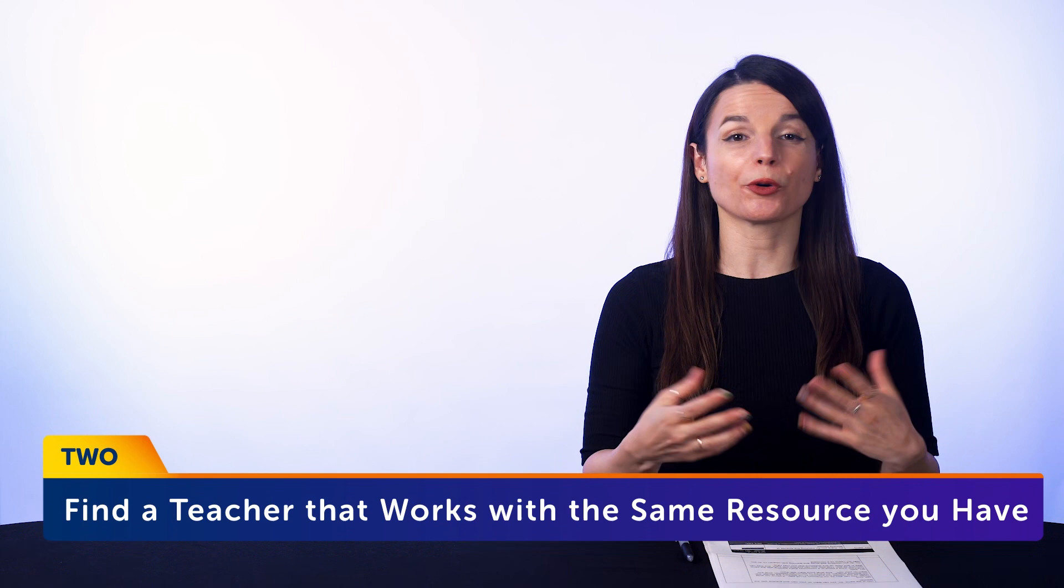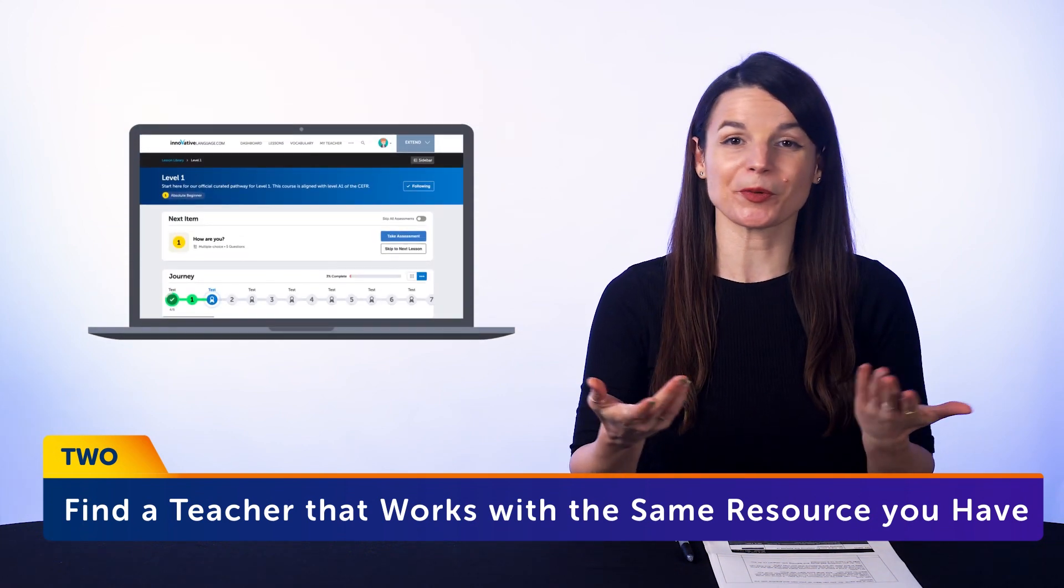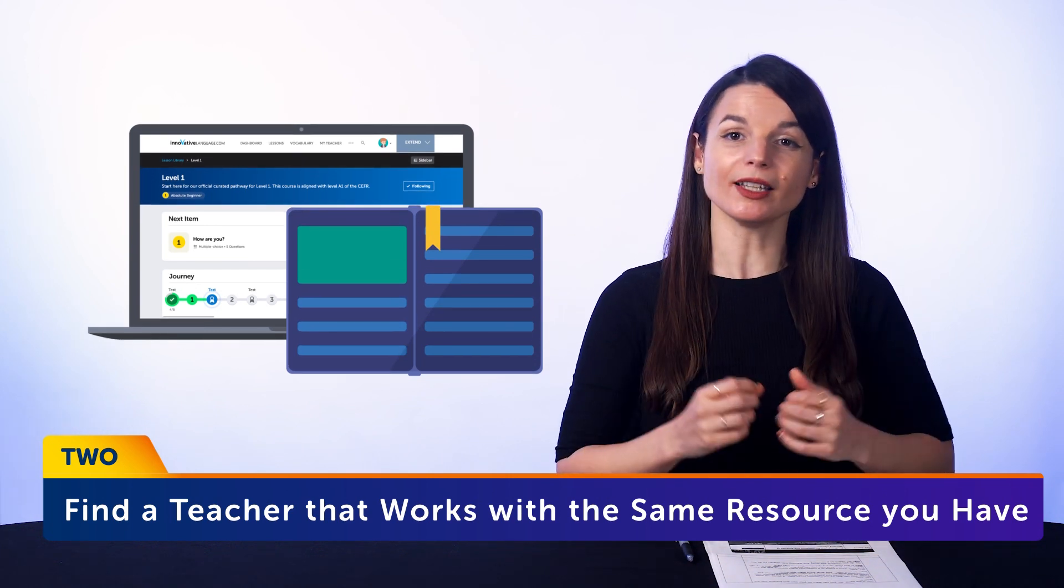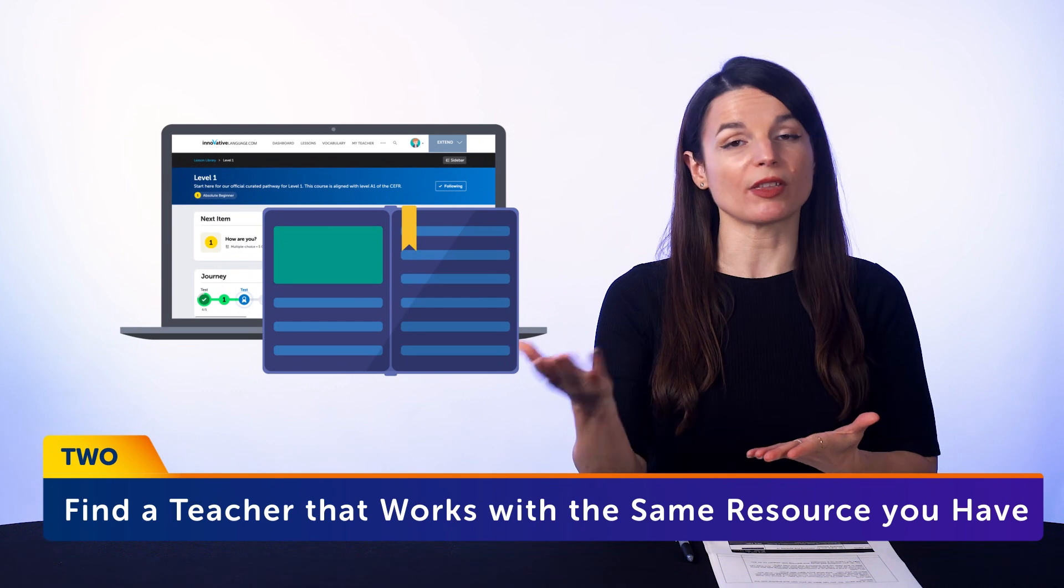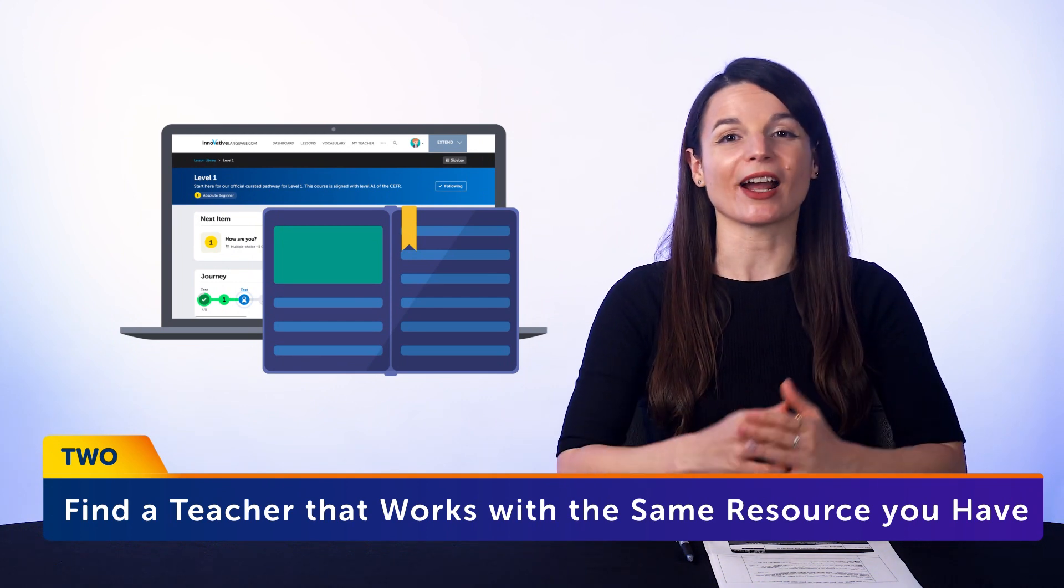2. Find a teacher or tutor that works with the same resource that you have, whether it's our program or a textbook. Have the tutor see what you're studying so they can match. And it's important that there's overlap, that what you're learning with the tutor, and on your own, is the same. So you can learn on your own and practice with the teacher.